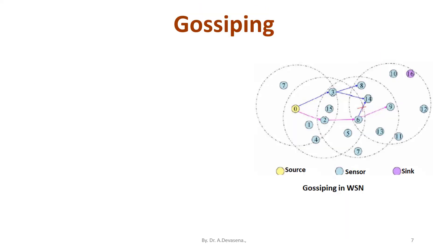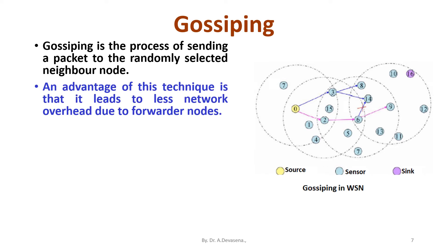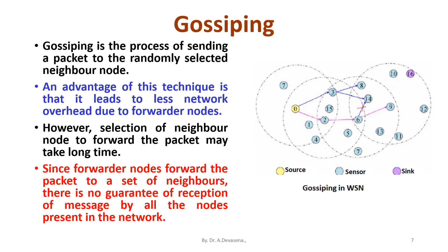Gossiping is the process of sending a packet to a randomly selected neighbor node. An advantage of this technique is that it leads to less network overhead due to forwarder nodes. However, selection of the neighbor node to forward the packet may take a long time. Since forwarder nodes forward the packet to a set of neighbors, there is no guarantee of reception of the message by all nodes in the network.